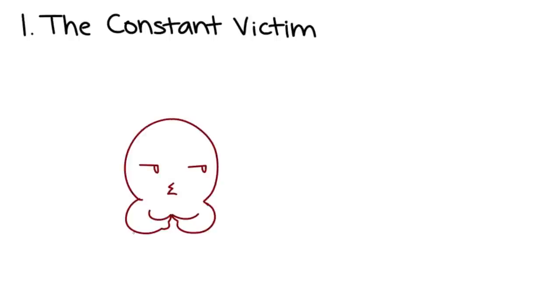10 types of emotional manipulators. Number 1: The constant victim. This kind of individual will always find a way to end up as the victim in their relationships.